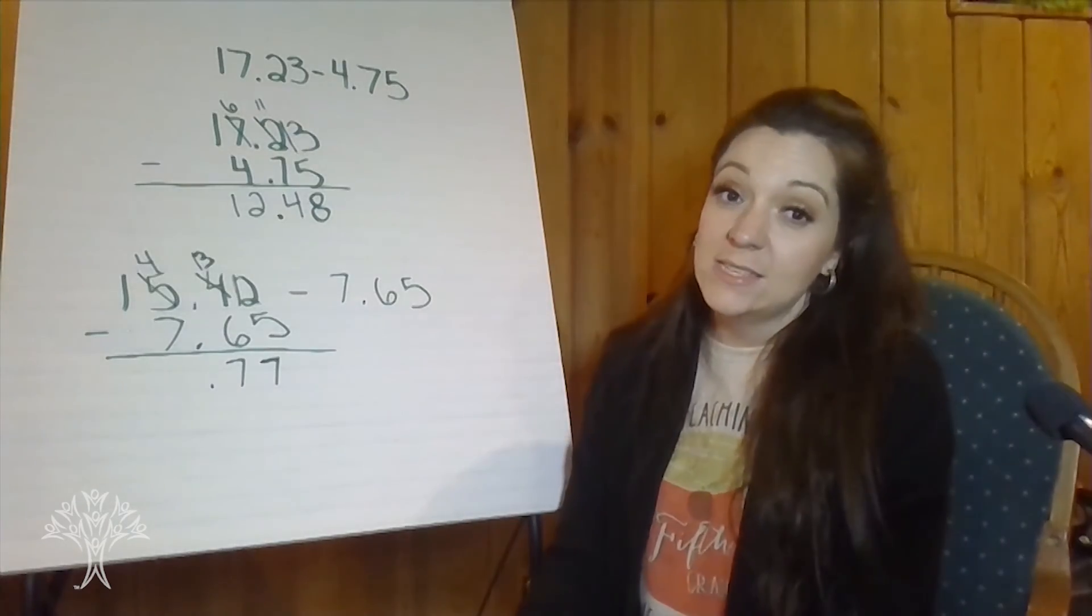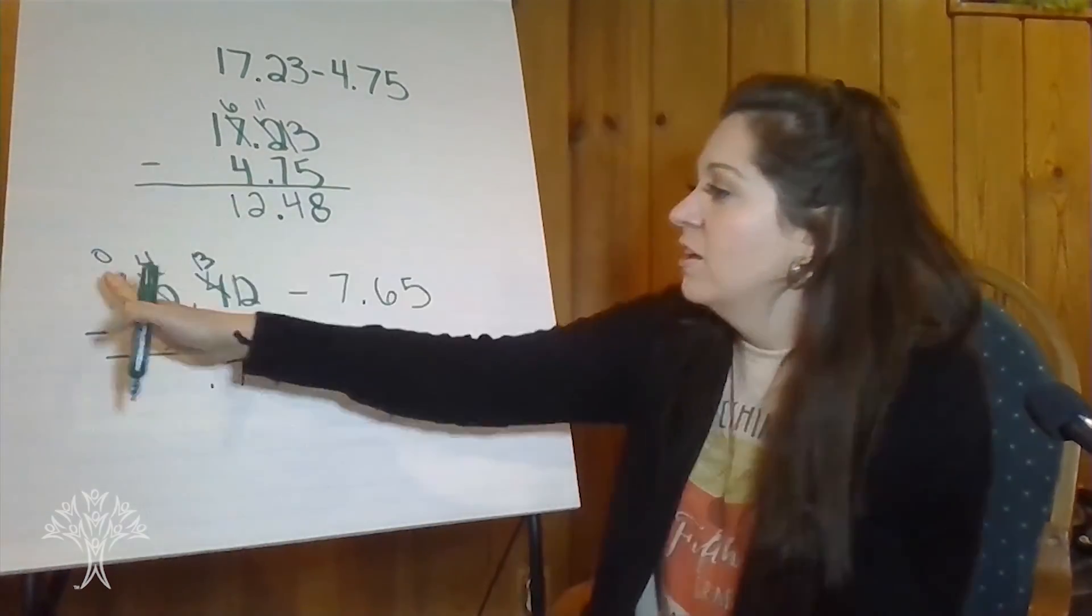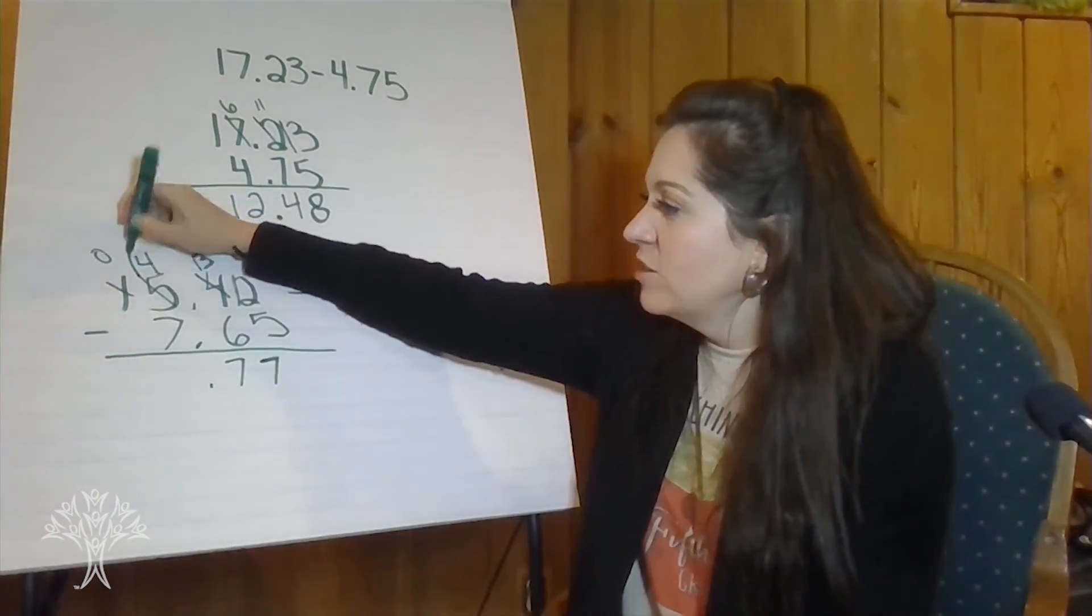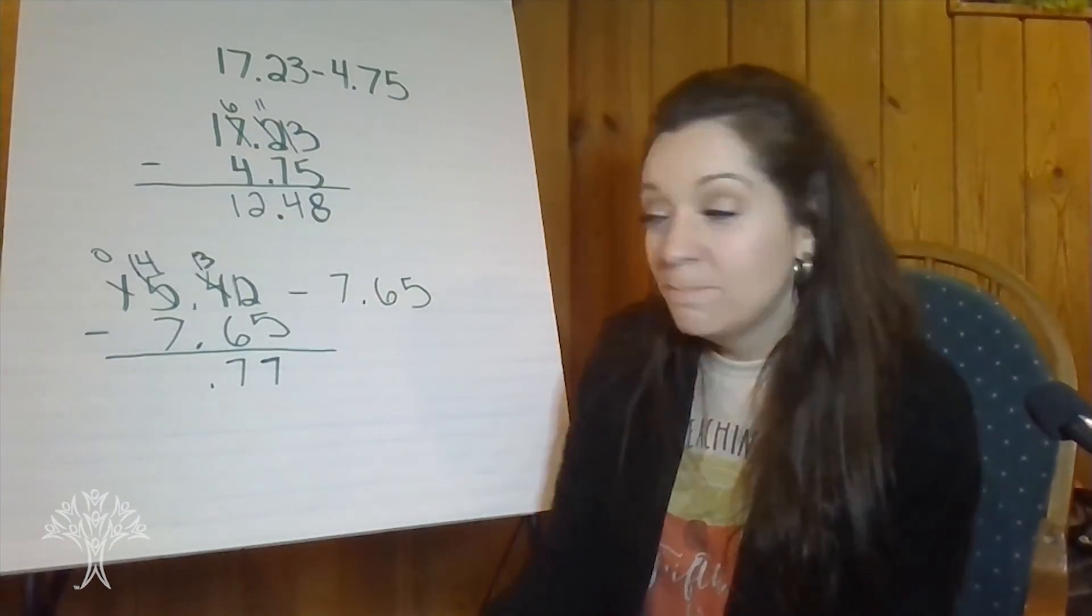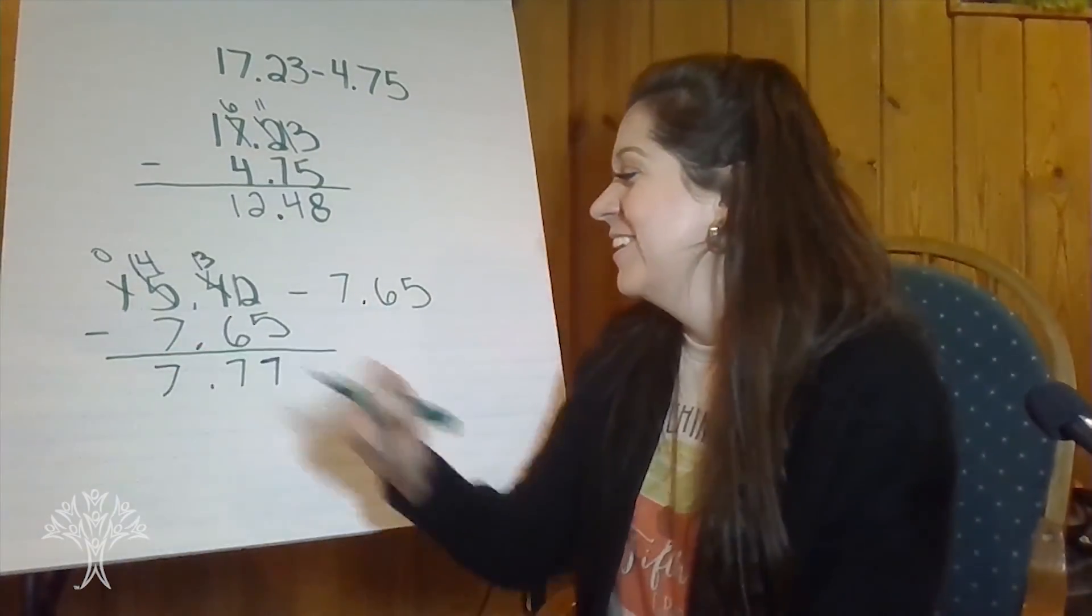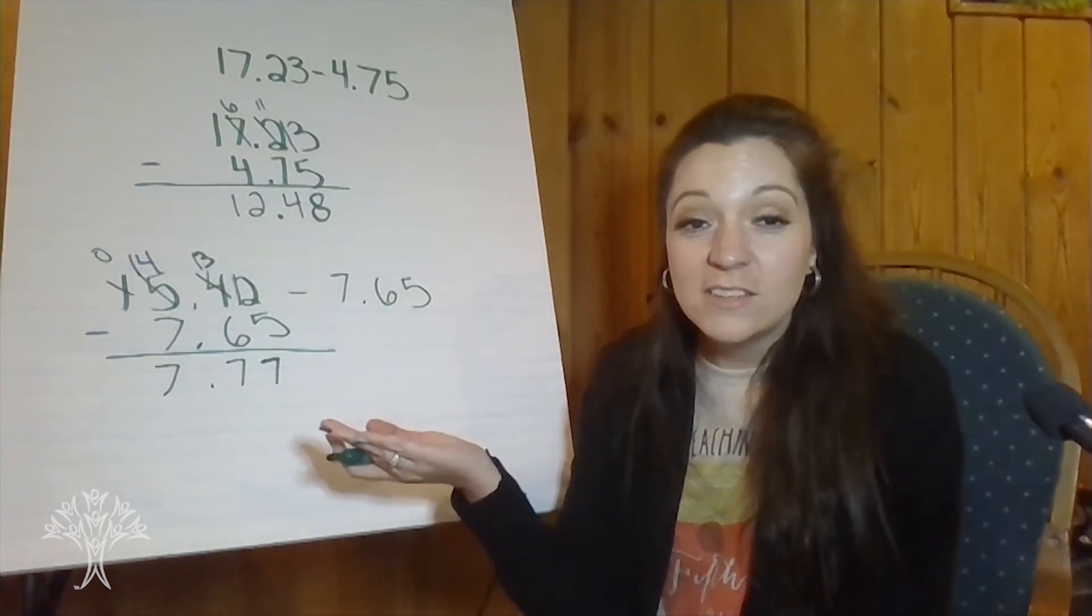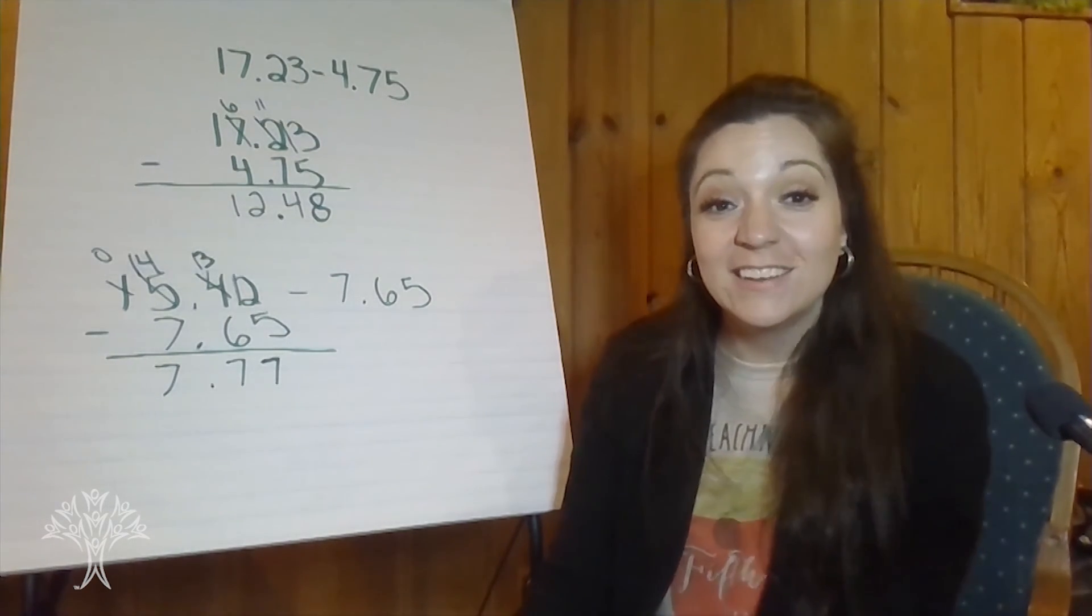Four ones take away seven ones. Can't do it. Not yet. So we take one from the tens and we make it into ten ones. So now we have fourteen ones take away seven. What is fourteen take away seven? Seven. Seven and seventy-seven hundredths. So there's some examples using the traditional algorithm for subtracting decimals.